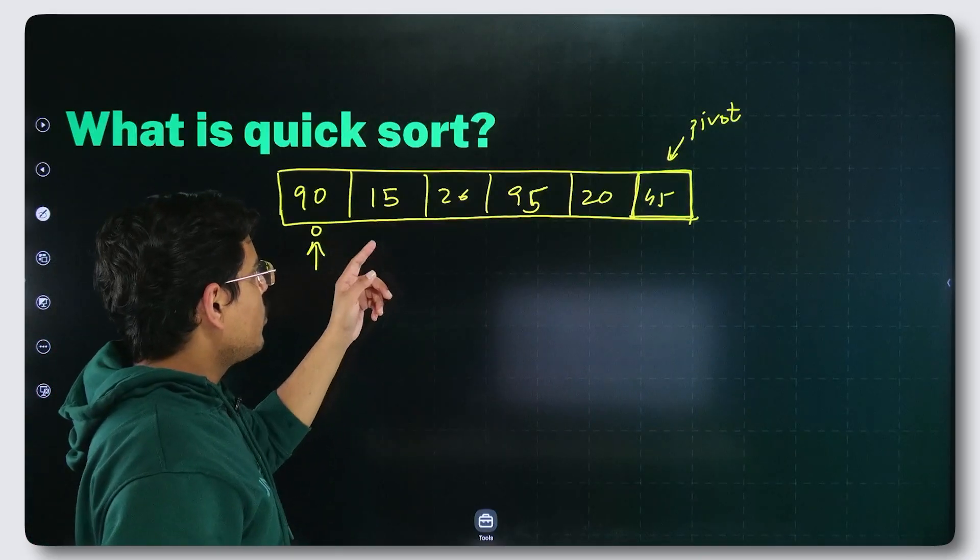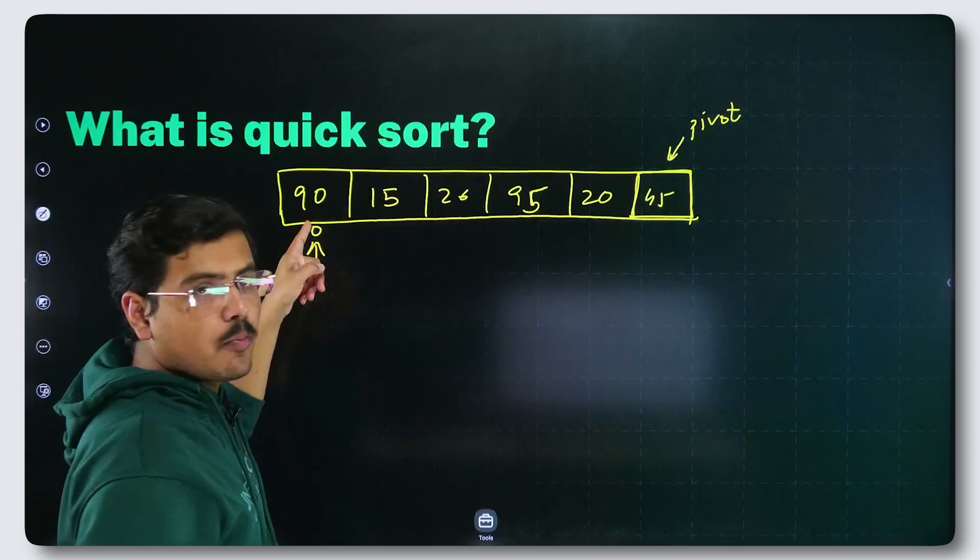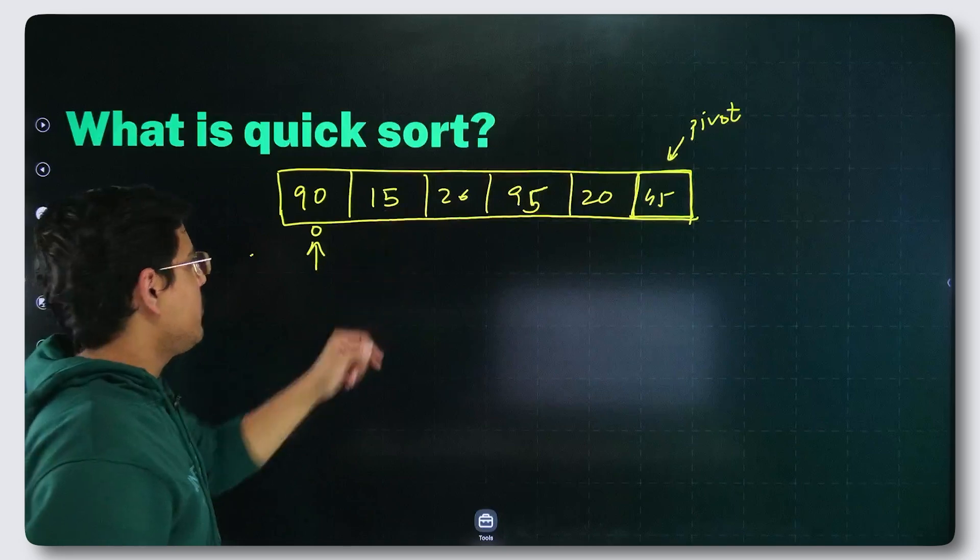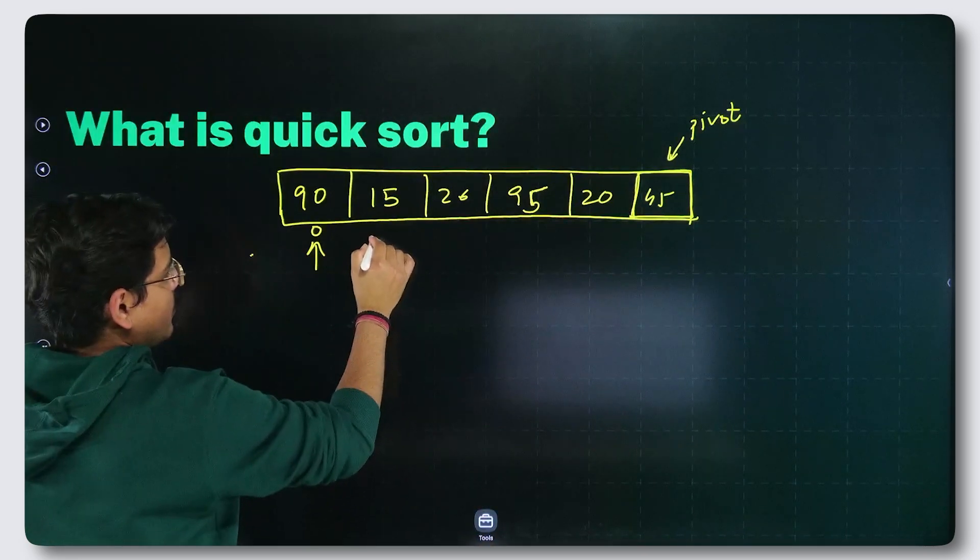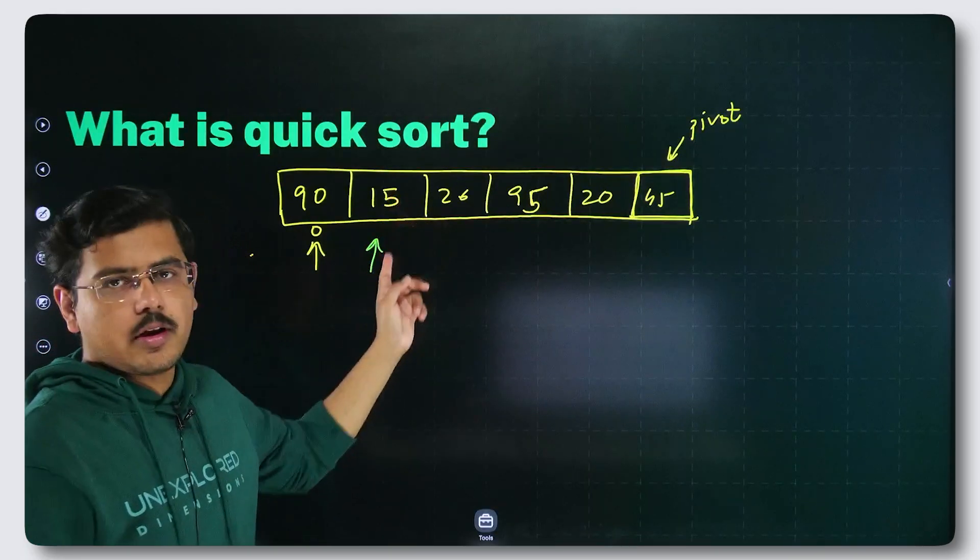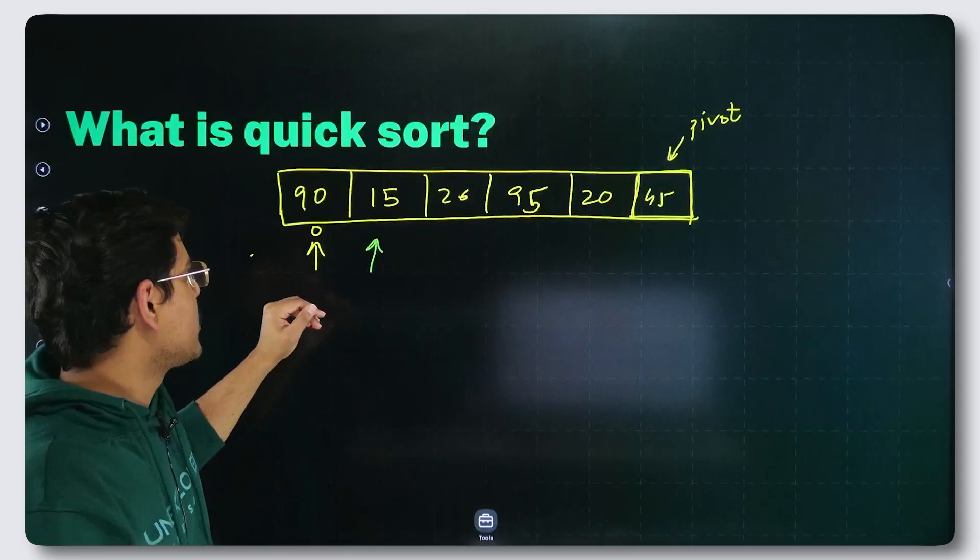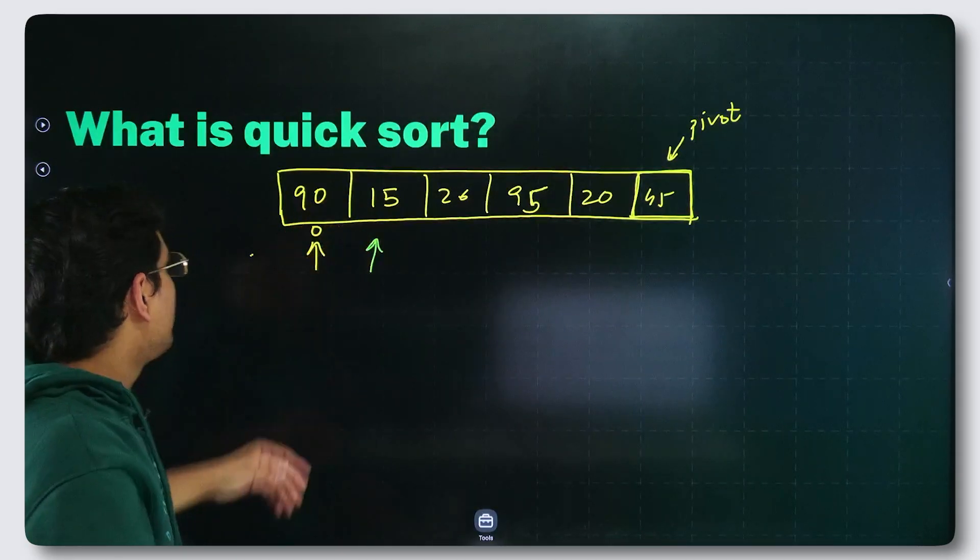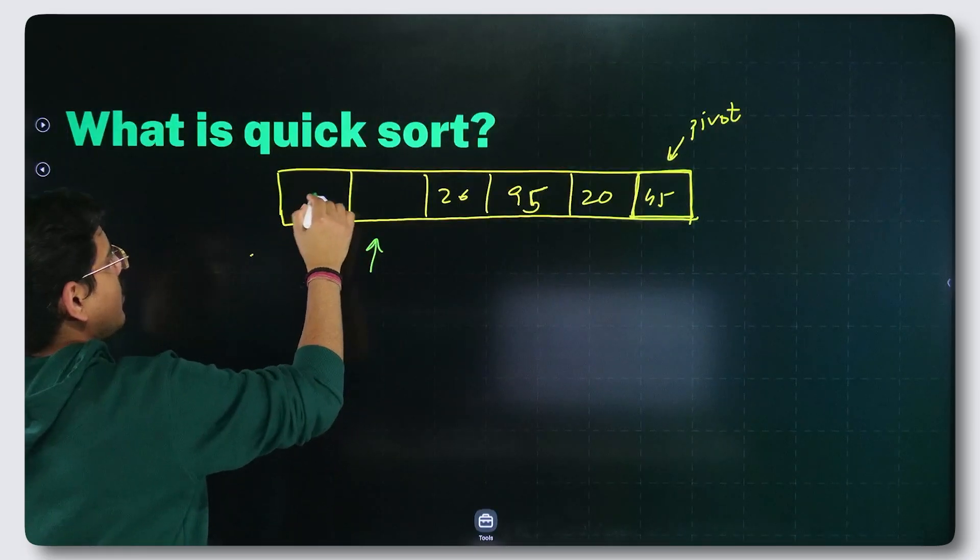Now I told you swap the smaller element with the element on the pointed place. The pointer is pointing to 90. The smaller element that we found. Let us take another particular pointer that is pointing to our smaller element. Just for reference, this is not happening in the actual sense. So we swap these two. What I am telling you to do is swap 15 and 90.